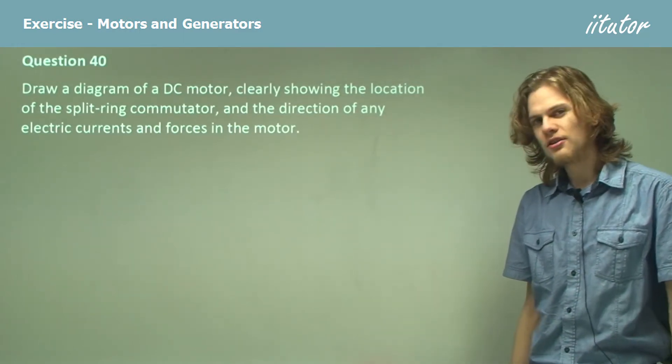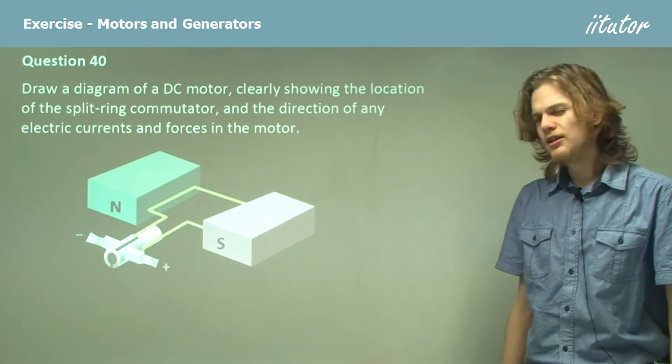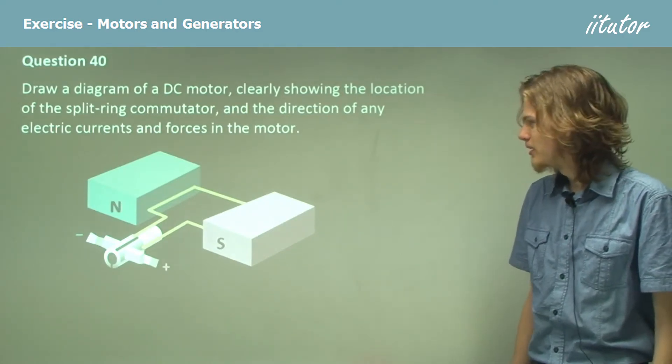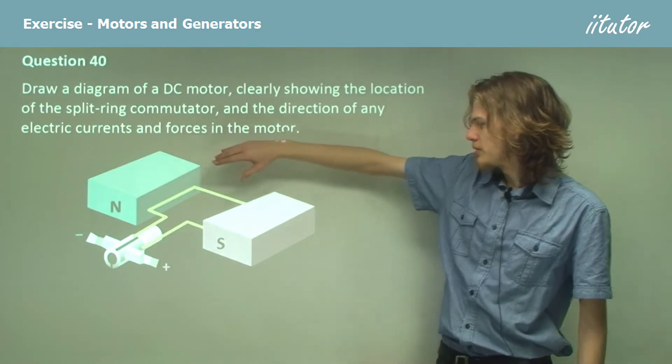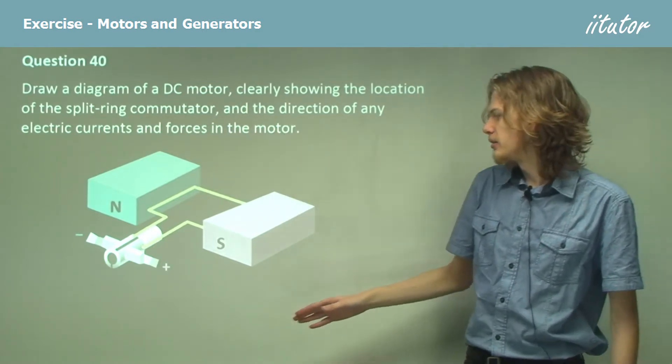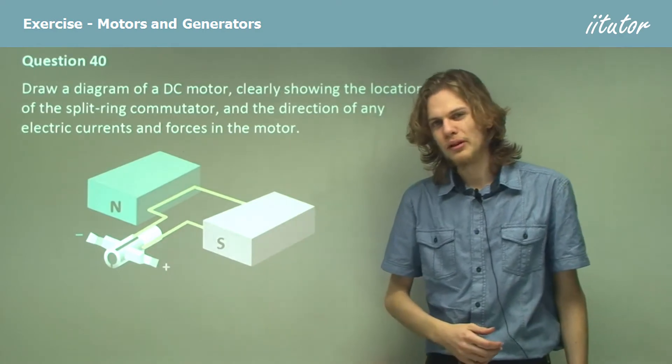So let's start off with the sketch of the motor. It should look something like this. Lovely little diagram here. North pole of the magnet, south pole of the magnet, and of course the rotor in the middle.